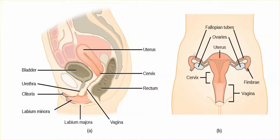It's in the fallopian tube where fertilization will occur if it's going to happen. Sperm will be deposited in the vagina, travel through the cervix into the uterus, and then move up the fallopian tubes. Human females typically ovulate one egg, switching back and forth between the two ovaries. The problem is that some sperm will go down the wrong fallopian tube where there's no egg to fertilize, so the idea is that some sperm should ultimately be able to reach the oocyte while it's in the fallopian tube.